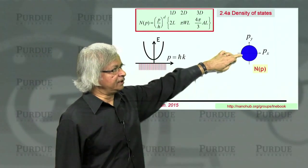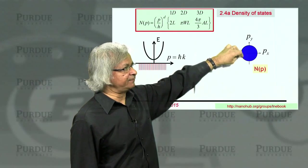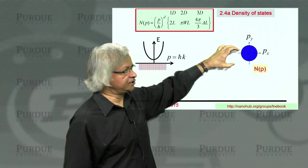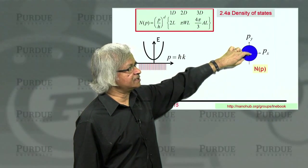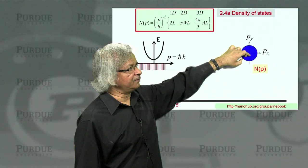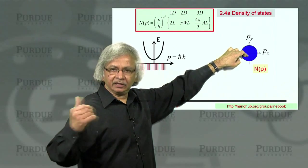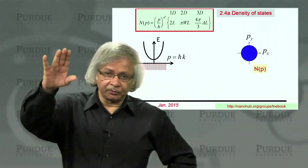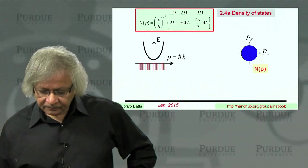So in momentum space you consider something like a circle or a sphere - a circle in two dimensions, sphere in three dimensions - and look at how many values of momentum are actually allowed using periodic boundary conditions. That's what we did in the last lecture.